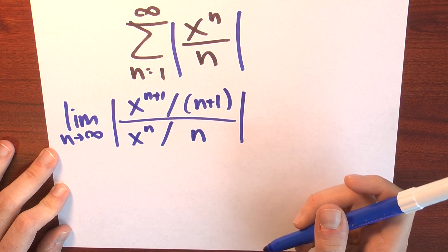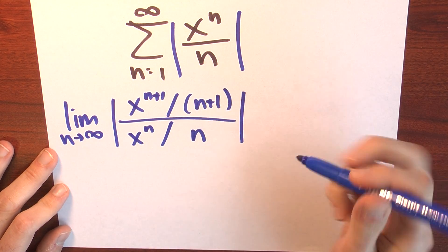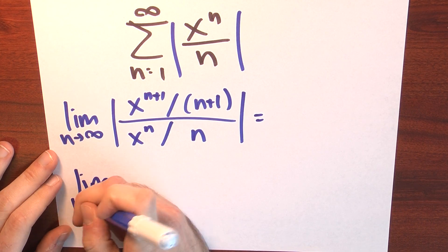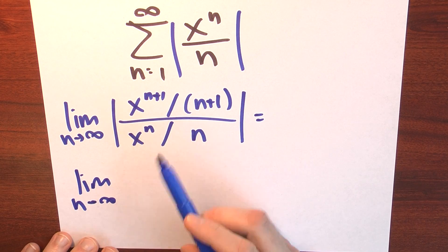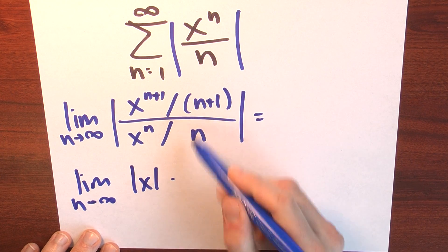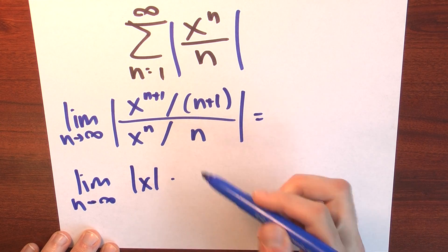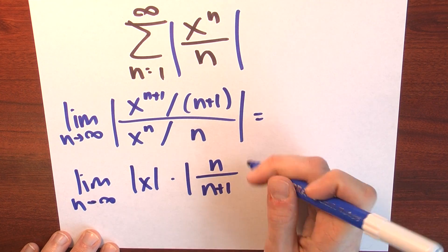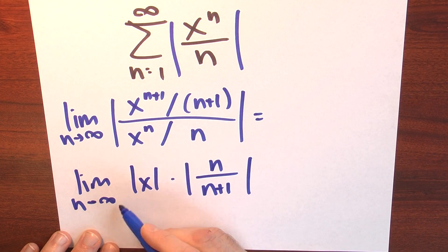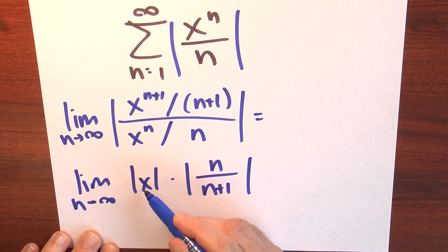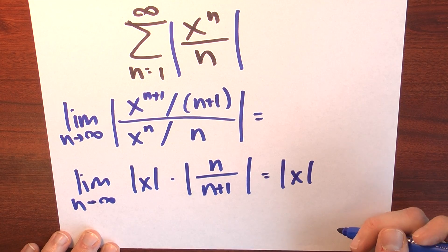The ratio test asks me to consider for which values of x this limit is less than 1. I can simplify: the limit as n approaches infinity of x to the n plus 1 over x to the n — those cancel and just leave me with an x. And n over n plus 1 in the remaining fraction. The limit of n over n plus 1 as n approaches infinity is 1, so this limit is just the absolute value of x.